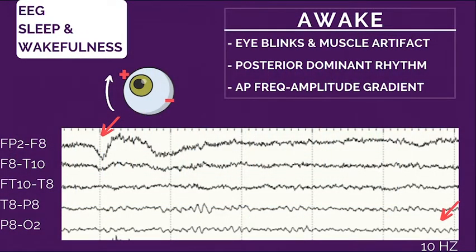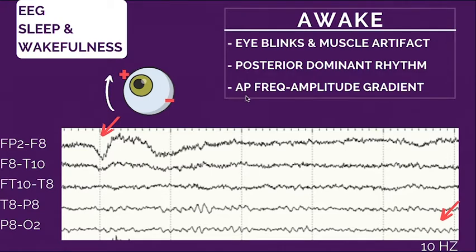How can we tell somebody's awake looking at the EEG alone? There are a few key things. If we see eye blinks, obviously somebody is awake. If there's muscle artifact, they're likely moving around and contracting muscles, so they're awake. We also have the posterior dominant rhythm, which indicates awake but relaxed, and the anterior-posterior gradient, also common to the awake state.